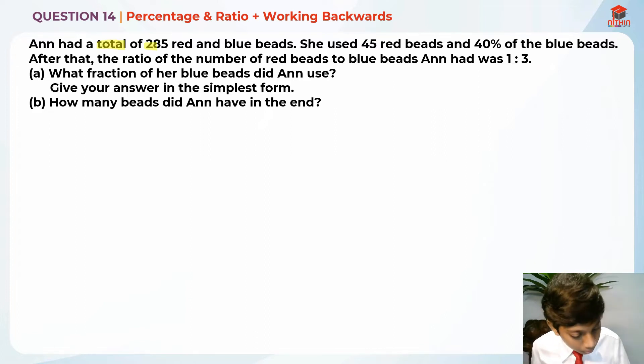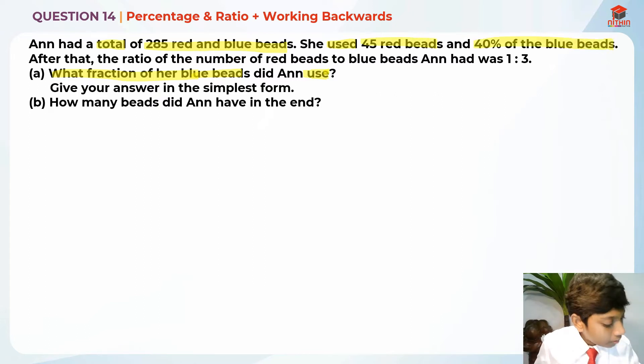Ann had a total of 285 red and blue beads. She used 45 red beads and 40% of the blue beads. After that, the ratio of the number of red beads to the blue beads Ann had was 1 is to 3. Part A: What fraction of her blue beads did Ann use? Give your answer in the simplest form.